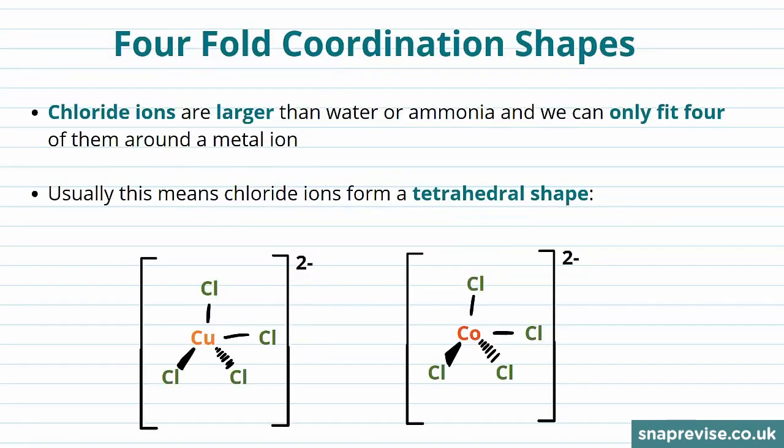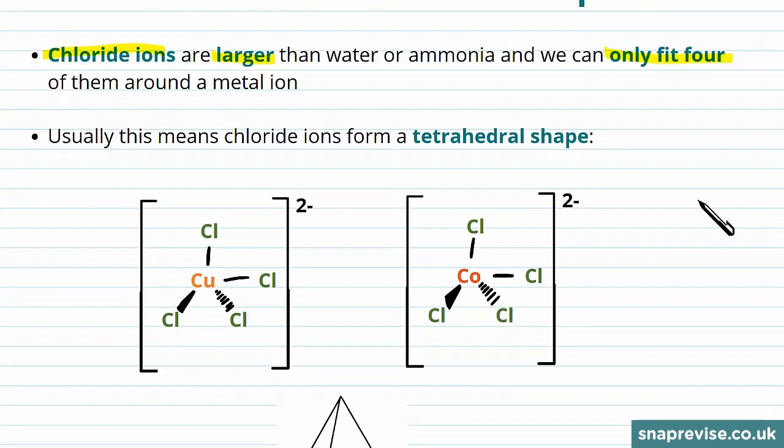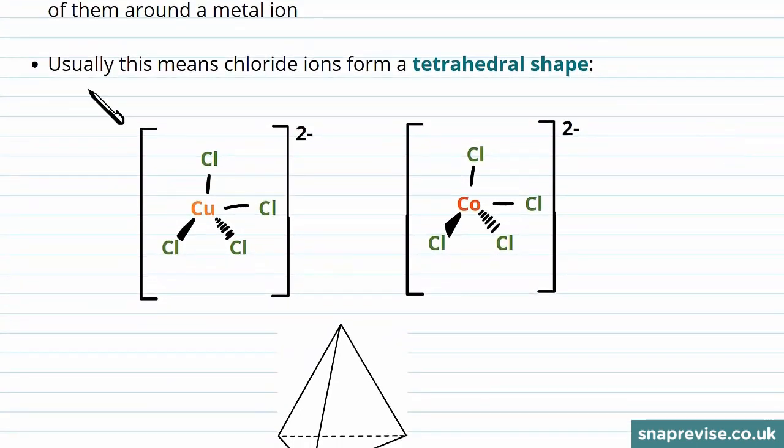Not all ligands form octahedral complexes, though. Chloride ions are larger than water and ammonia, and so we can only fit four of them around a metal ion rather than six. The four chloride ions that we fit round gives us the shape of a tetrahedron. So it's a tetrahedrally shaped complex ion.